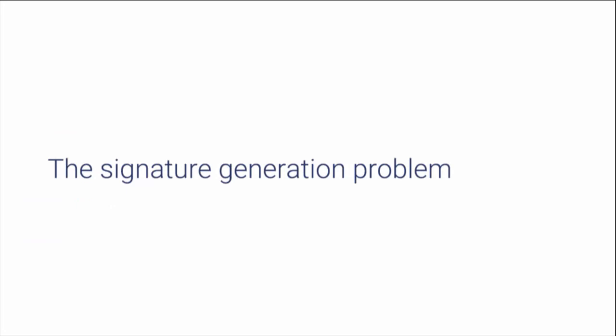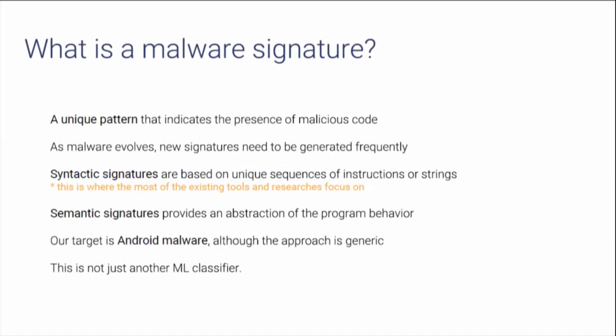Let's start talking about the signature generation problem. What is a malware signature? A malware signature is a unique pattern that indicates the presence of malicious code. Since malware evolves over time, new signatures should be generated very frequently. Historically, there are two types of signatures: syntactic signatures and semantic signatures. Syntactic signatures are those based on textual strings and binary sequences extracted from the application, and this is also the industrial standard type.